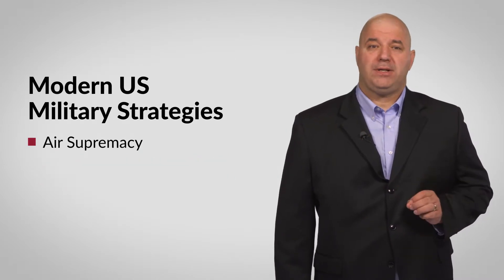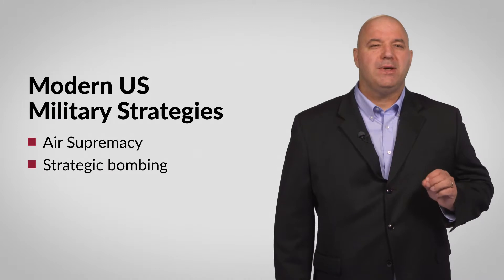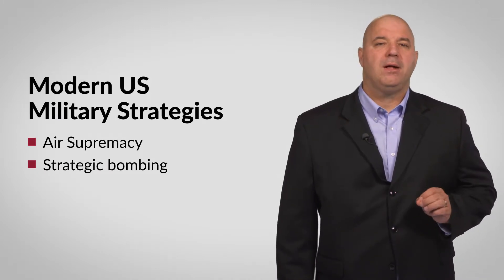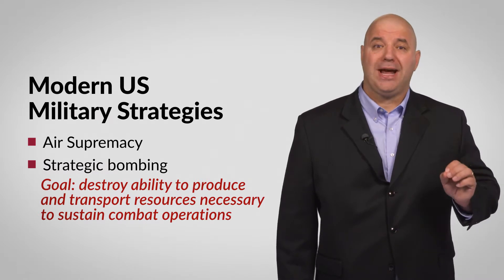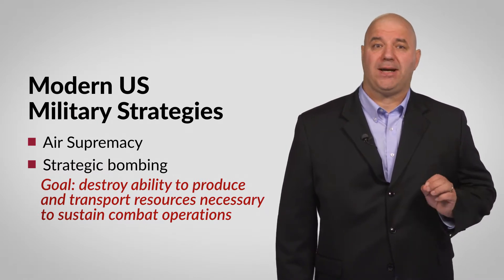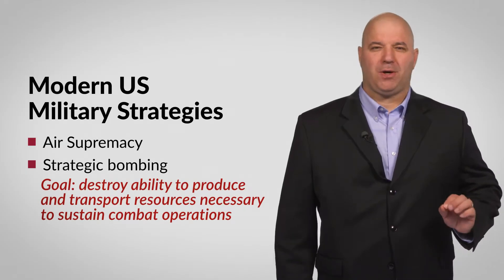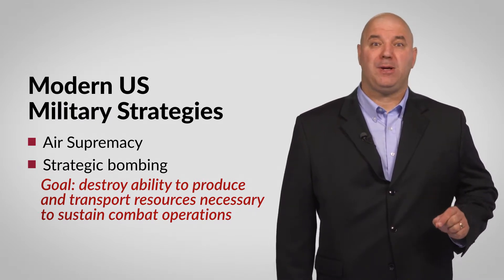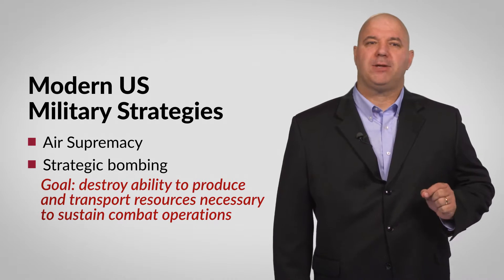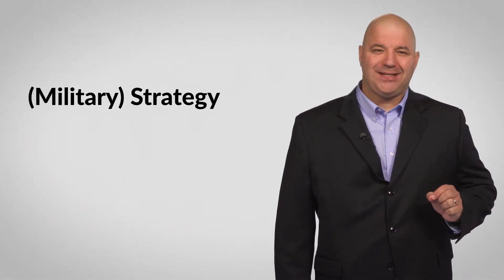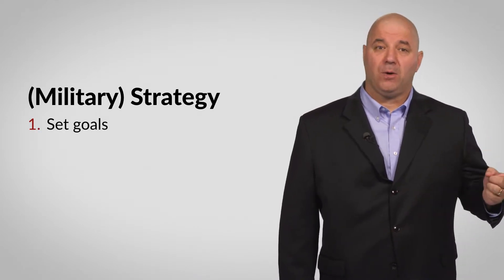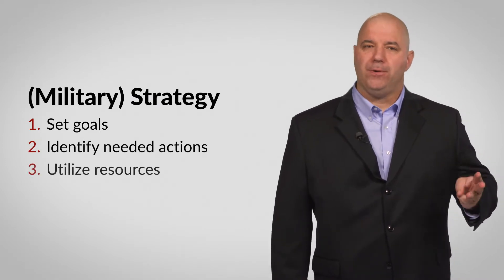When air supremacy is achieved, it enables increased bombing efforts, tactical support of ground forces, unimpeded logistics support, and rapid deployment of military assets. In conventional warfare, controlling the skies also allows forces to control most land and sea operations. A related modern US military strategy is strategic bombing — its goal is defeating an enemy by destroying its economic ability to produce and transport resources necessary to sustain combat operations. Bombers are used to take out factories, bridges, power grids, and other infrastructure, which also destroys an enemy's morale and will to fight. As these examples show, military strategies share the common characteristics of any strategy: they set goals, identify action plans, and utilize resource allocation.